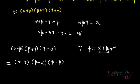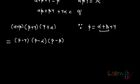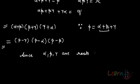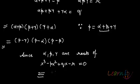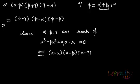Beta plus gamma turns into p minus alpha, and gamma plus alpha equals p minus beta. So this expression is the same as that expression. Since we know that alpha, beta, gamma are roots of the given equation x cubed minus px squared plus qx minus r equals 0, I can represent this equation in factored form as x minus alpha, times x minus beta, times x minus gamma.